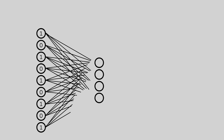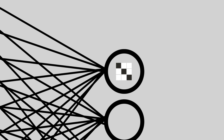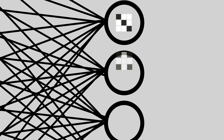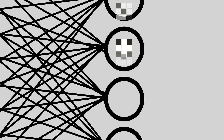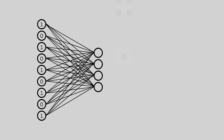Next comes our hidden layer, and for simplicity let's say it's made up of four nodes. Each node in this hidden layer acts like a pattern detector. So one node might be focusing on a diagonal line pattern, another could be checking for activity in a corner, and another could be checking for activity in the middle.